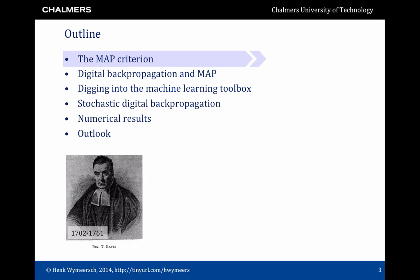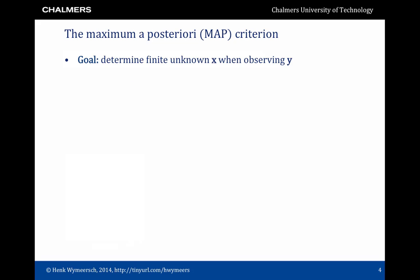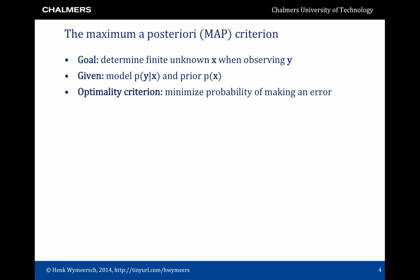First of all, the MAP criterion. Our goal is to determine an unknown X when observing Y. In the context of communication, Y could be an oversampled signal and X could be a sequence of bits. We are given a model P(Y|X), called a likelihood function, and a prior P(X). Our optimality criterion is to minimize the probability of making an error, which in many cases is a very meaningful criterion, especially in digital communications. It turns out that the detector that minimizes this probability is the MAP detector, given by this expression.